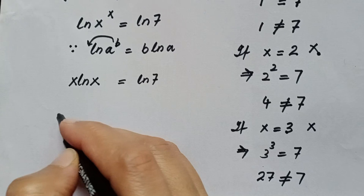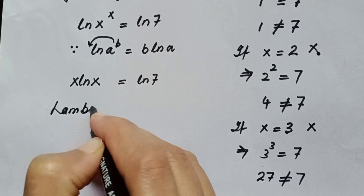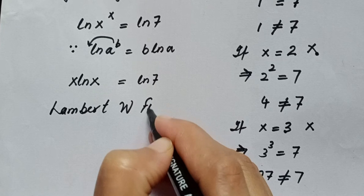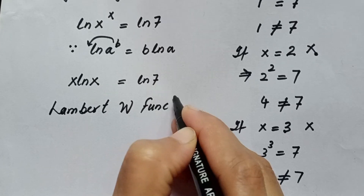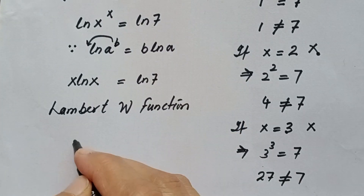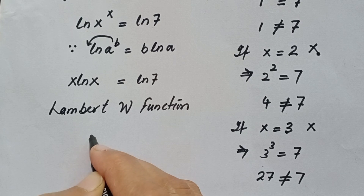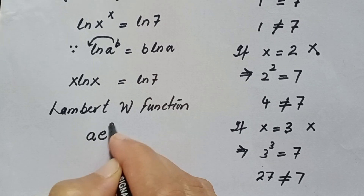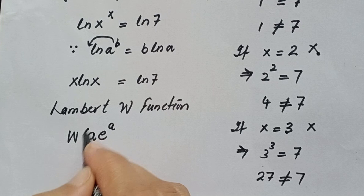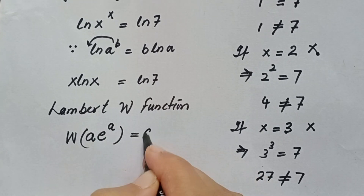Here we will recall the Lambert W function. In the Lambert W function, if we are given an expression of the form a·e^a and we apply the Lambert W function, we get the result equal to a.